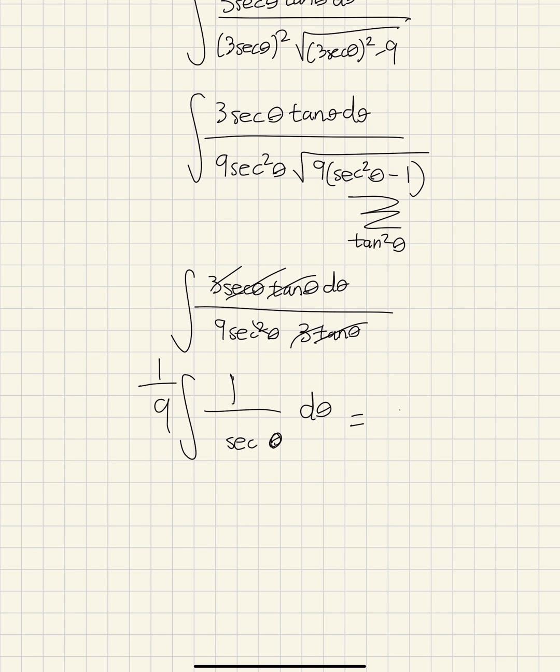We know secant theta equals the inverse of cosine theta. So it's 1 over 9 cosine theta d theta. And now we get 1 over 9 sine theta.